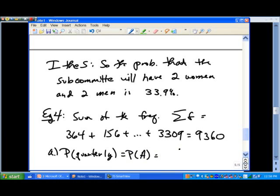Probability of quarterly. And we wrote P of A for that. That's simply the number of quarterly periodicals we have. 3,309. Divided by the sum, the total number of periodicals.